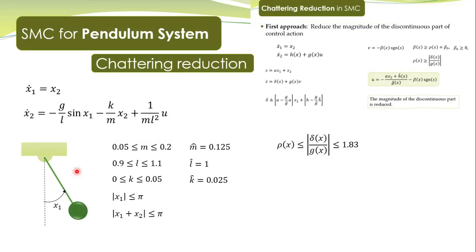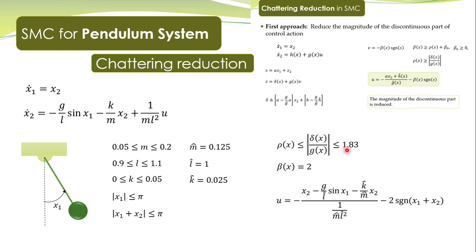Hence, our control action is given here. Rho is less than or equal to 1.83, and beta equals rho plus beta-naught, where beta-naught is some positive constant. Therefore, beta of x comes out to be equal to 2 — slightly larger than 1.83. You can of course take another value of beta-naught as well.